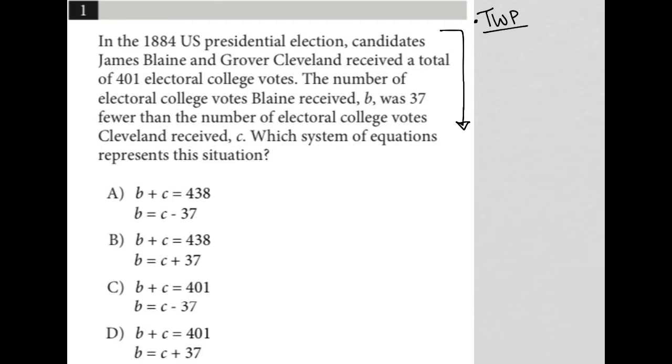The next sentence says the number of electoral college votes Blaine received, B, was 37 fewer than the number of electoral college votes Cleveland received, C. So I can translate that. That means B was equal to 37 fewer than C, which means B is equal to C minus 37.